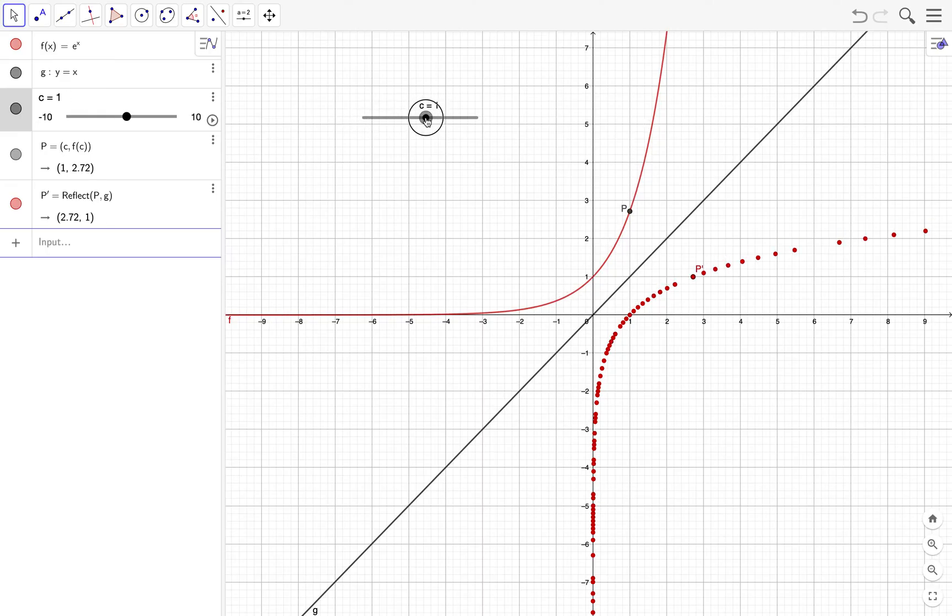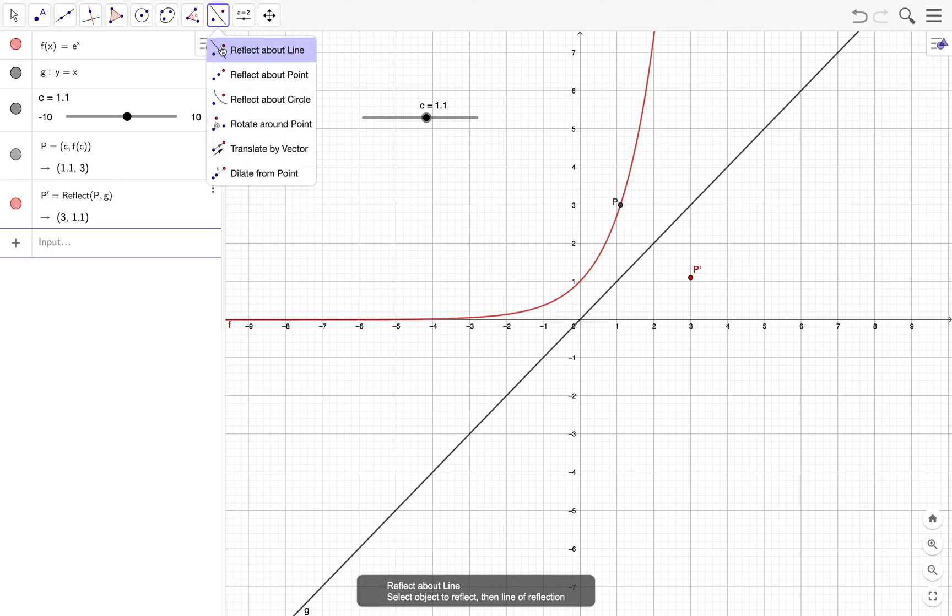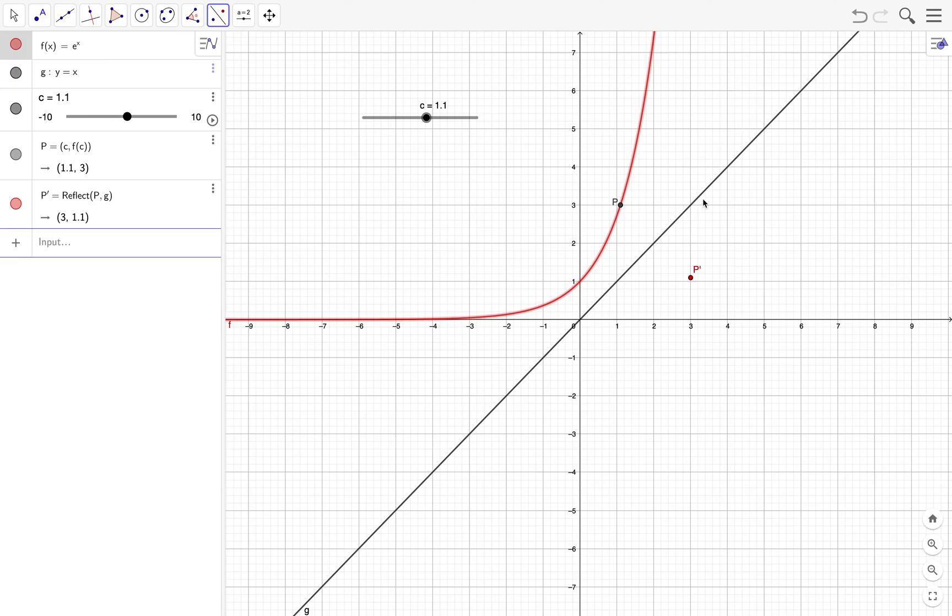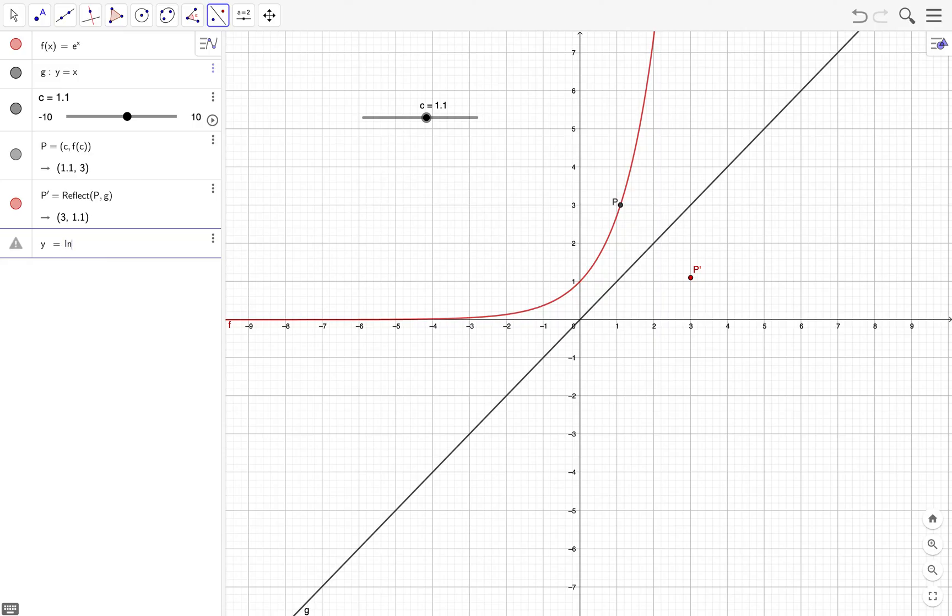So what do you think is the function traced by P prime? Of course you know this is the inverse function of e raised to x, of f of x equals e raised to x. Either you reflect the function or the graph of the function, or you can also delete this and type y equals ln of x, which is the logarithmic function.